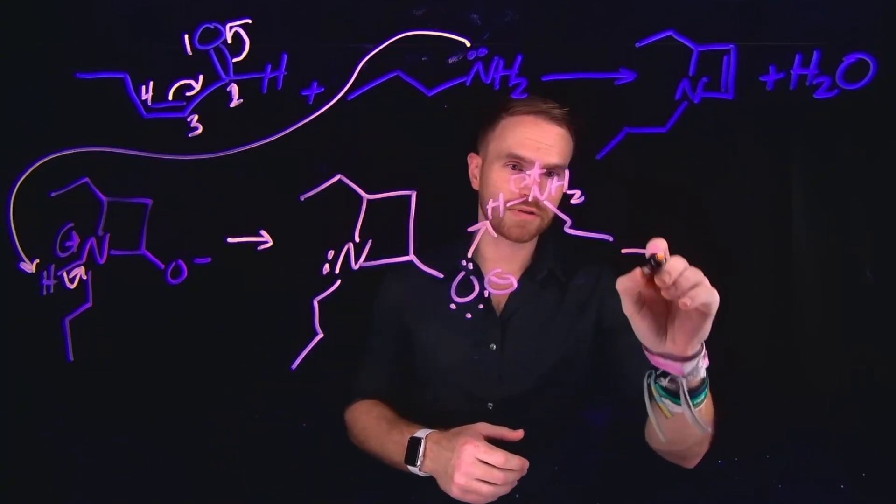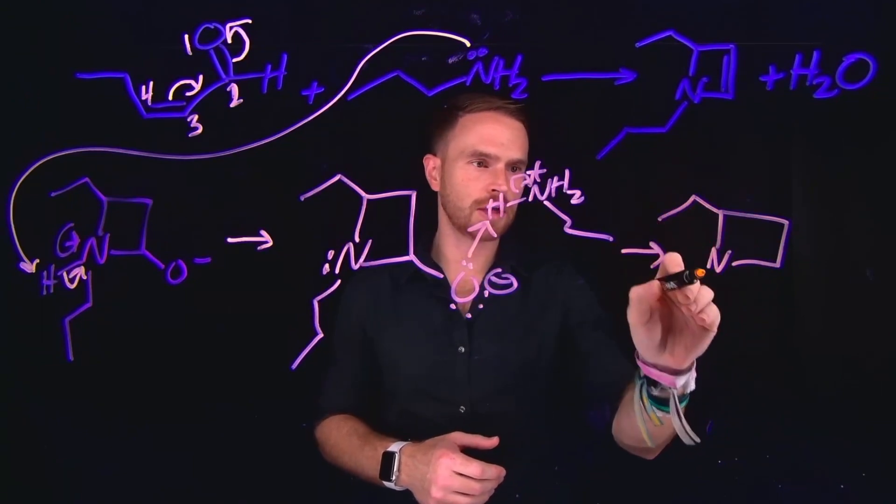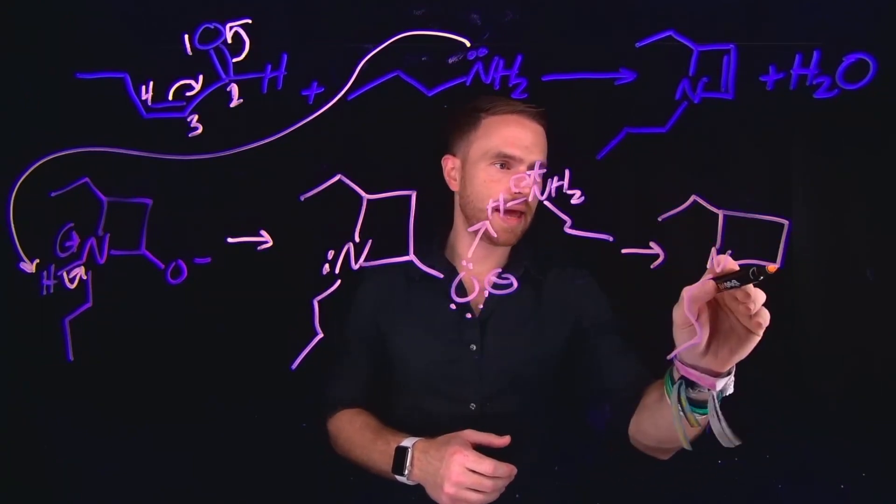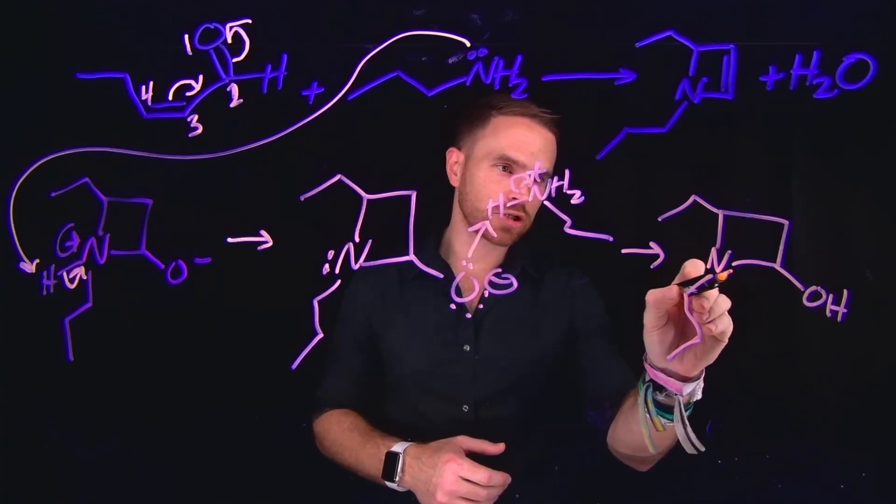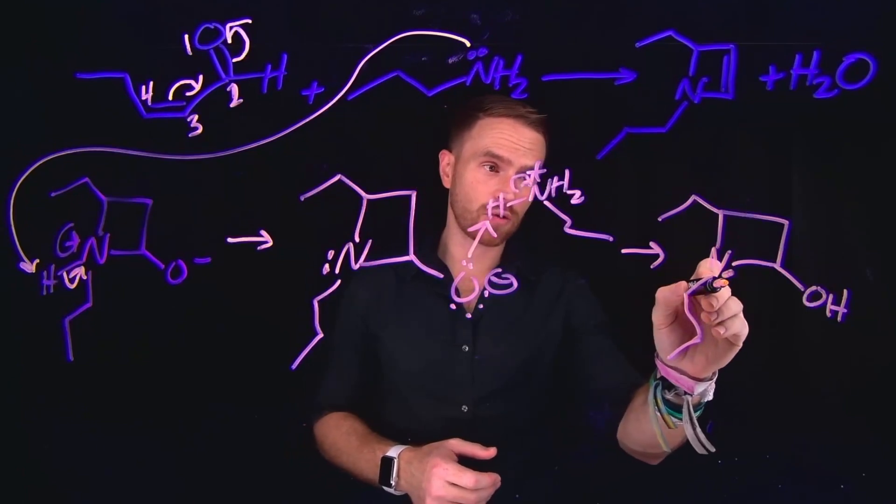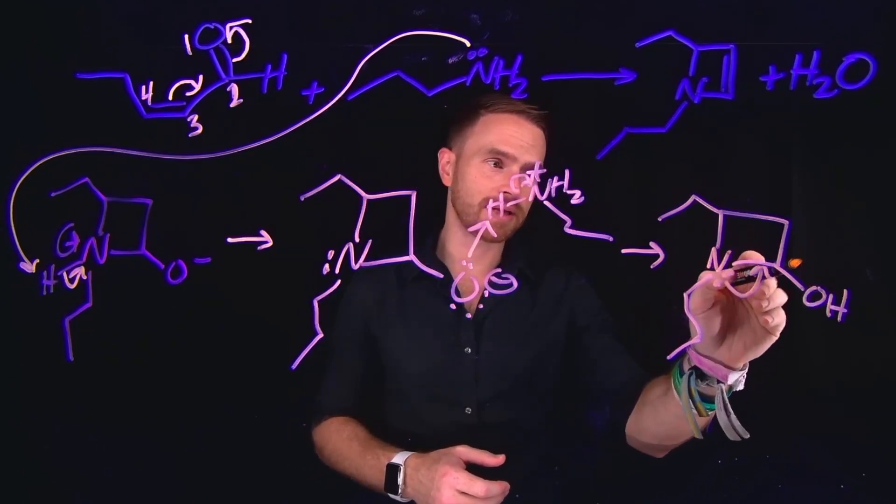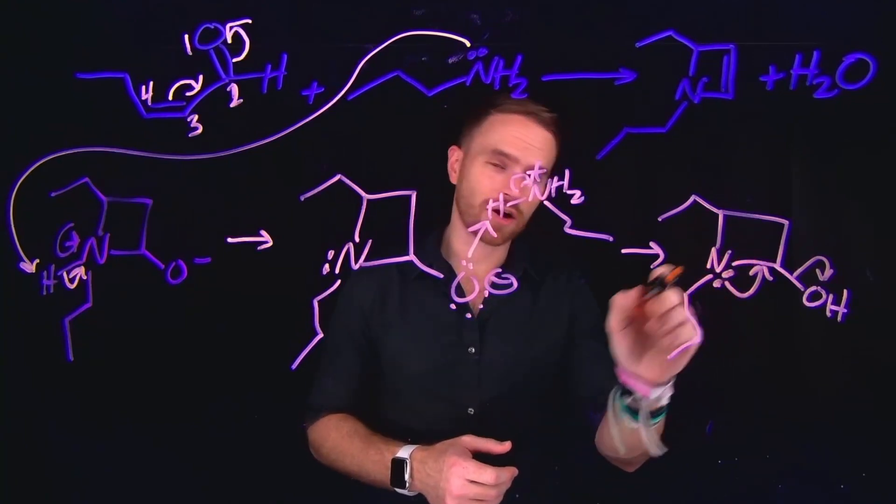And at this stage, the product of this transformation is beginning to look much more like our final product, where we have now generated an alcohol at this position. And remember, this nitrogen has a lone pair of electrons on it. At this stage, this lone pair of electrons can come down and be used to kick off the alcohol, generating a new nitrogen to carbon double bond.